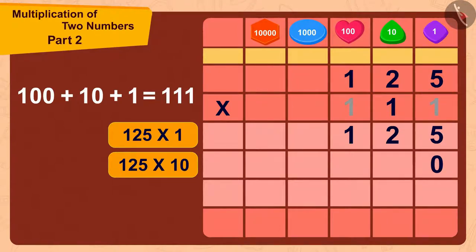In this way, 125 multiplied by 10 would be 1250.